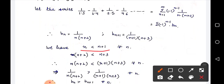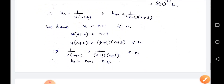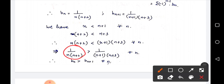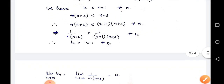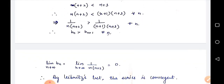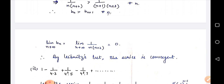Next, limit n→∞ of bn = 1/(n(n+2)) = 1/∞ = 0. So both conditions of Leibniz test are satisfied for this question. Therefore, by Leibniz test, the series is convergent.